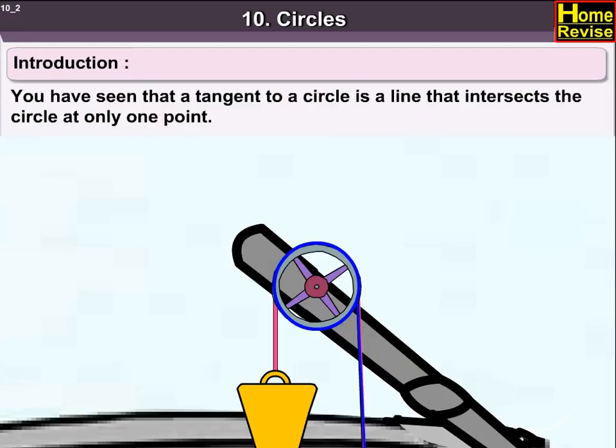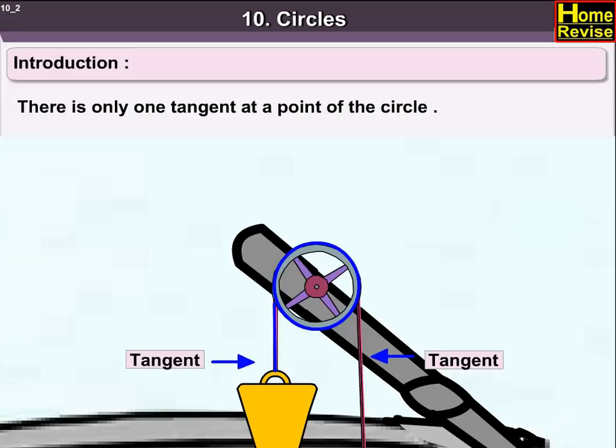You have seen that a tangent to a circle is a line that intersects the circle at only one point. There is only one tangent at a point of the circle.